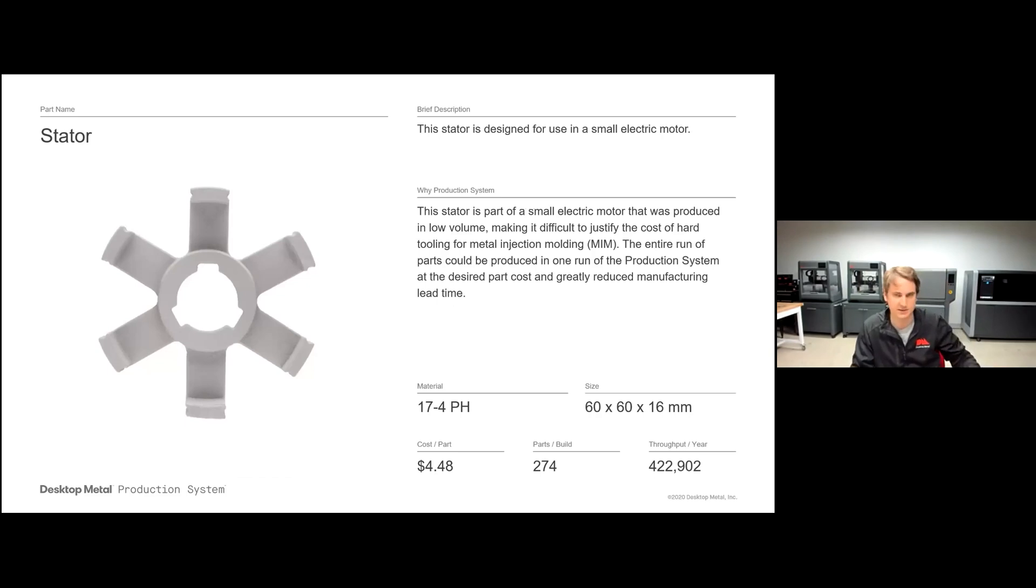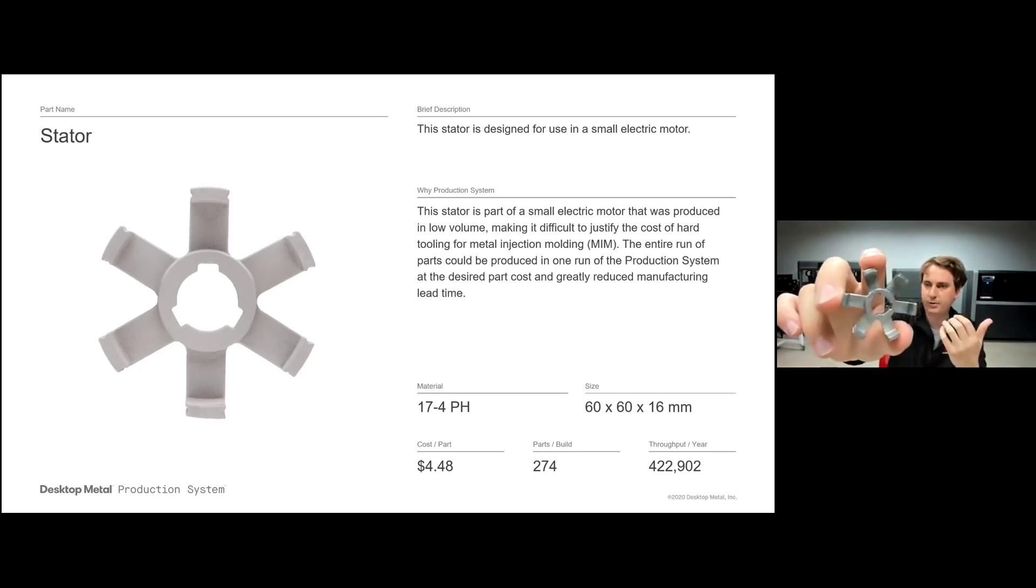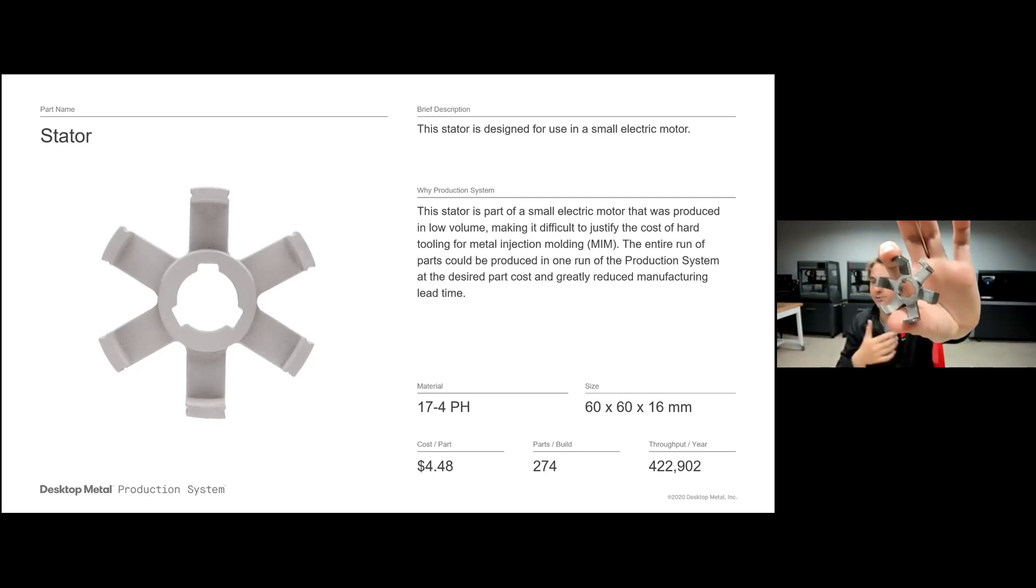Another part we're going to look at here is this stator. This is designed for use with a small electric motor. It has some difficult geometry to it, which would make it quite difficult and expensive to cast and also very expensive for just $4.48, over 274 of them per build, over 400,000 of these parts per year. So a great example of really driving down that cost and upping that throughput to allow for very high volume of these nice binder jet geometries as a replacement to casting.